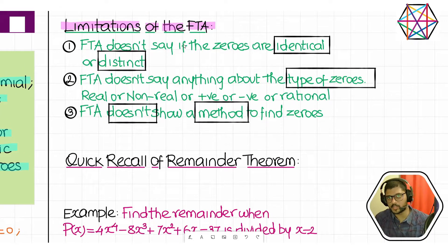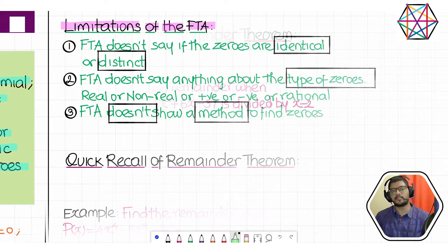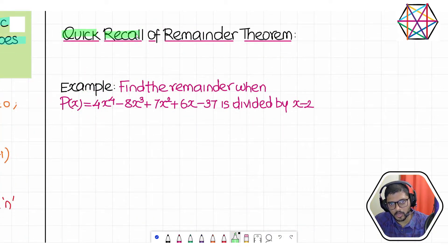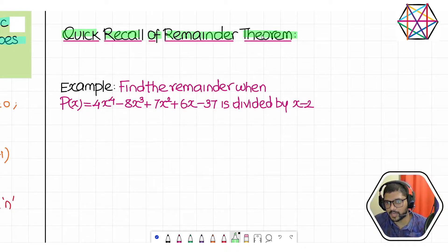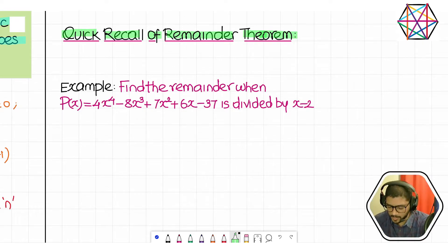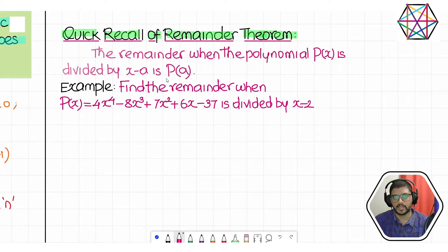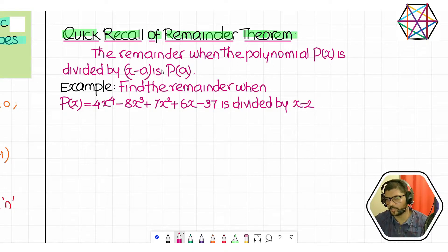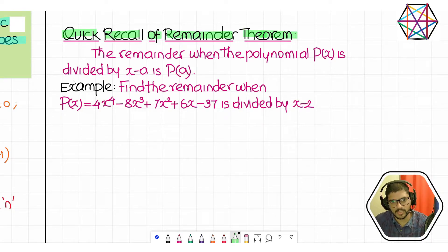Now we are quickly recalling the remainder theorem — it's a proper class 9 topic, but very important. We are going to quickly recall it. We are not discussing the proof; I will just give you the statement and we will understand it using an example. The remainder when the polynomial P(x) is divided by x minus a — which is a linear polynomial — is P(a).